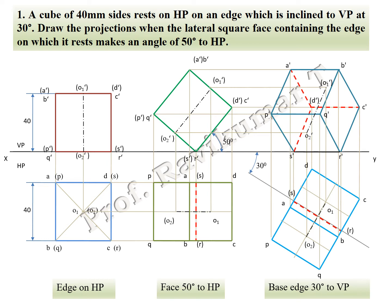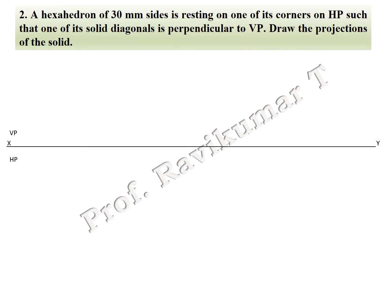Now we will see the hexahedron problem. Hexahedron means it has six square faces. In the hexahedron also, it has a top face and a bottom face. The top face is considered as P, Q, R, S and the bottom face as A, B, C, D.